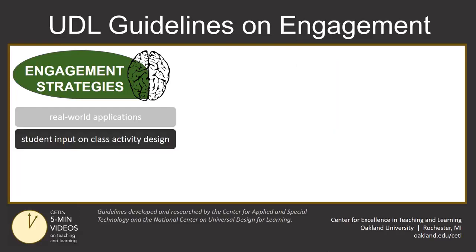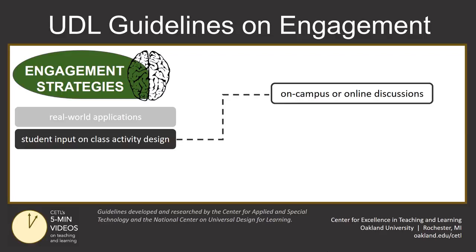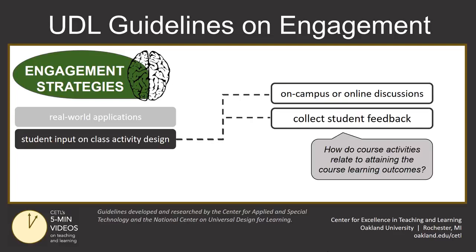Ask past students to share how their course experiences both met learning outcomes and were authentic in their professional and personal lives. Also, build in opportunities for students to have input in how classroom tasks and activities are designed. There are a number of ways that learners can have a voice in classroom structure. Ask them to decide whether certain discussions take place online or in a face-to-face class session, or take the class temperature by collecting regular and informal feedback on how students see activities relating to the attainment of learning outcomes. This feedback can help your work as an instructor, but it can also force students to consider how they can better align their work and effort to achieve learning outcomes.